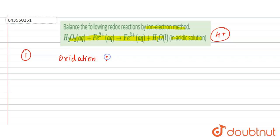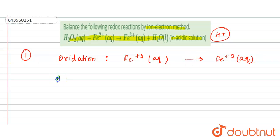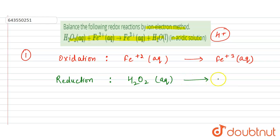For the oxidation reaction, Fe²⁺ (aqueous) is converted to Fe³⁺ (aqueous). For the reduction reaction, H₂O₂ (aqueous) is converted to H₂O (liquid).